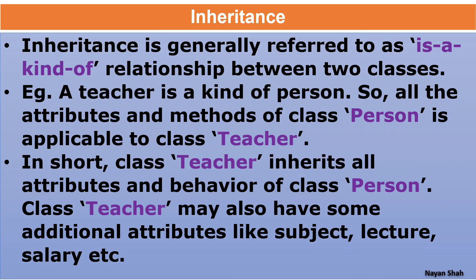Now, inheritance. What is inheritance? The easiest way to understand inheritance is through the concept of a legacy or 'warso' - your grandfather passed his inheritance to your dad, and you are your parents' inheritance. Inheritance is generally referred to as an 'is a kind of' relationship. The difference between aggregation/composition and inheritance is here: in inheritance it is an 'is a kind of' relationship, whereas in aggregation/composition it is a 'has a' or 'part of' relationship.